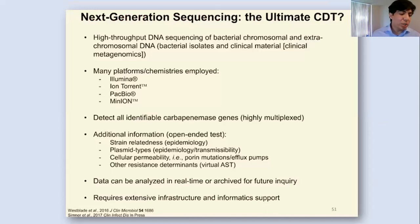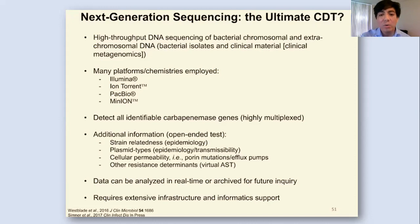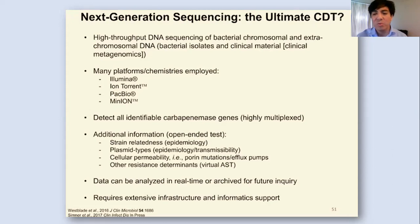Some strains produce beta-lactamases plus additional resistance mechanisms such as porin loss or efflux pumps. To detect those, whole genome sequencing via next-generation sequencing is needed. We don't have this in-house at Jackson but send samples to research centers. This is particularly relevant for metallo-beta-lactamase-producing strains and Pseudomonas, which often harbor multiple simultaneous resistance mechanisms.